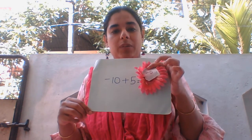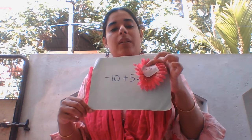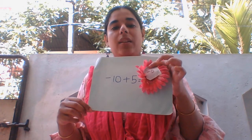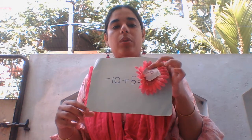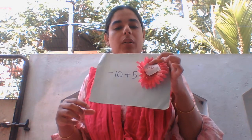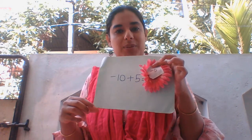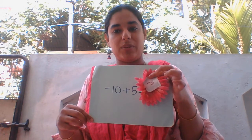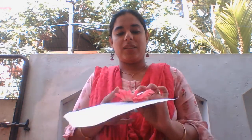Each of you arrange the flower and come in front of the box. You have to tell what numbers you picked and what answer you got. So it is in your hands — let us do the activity.